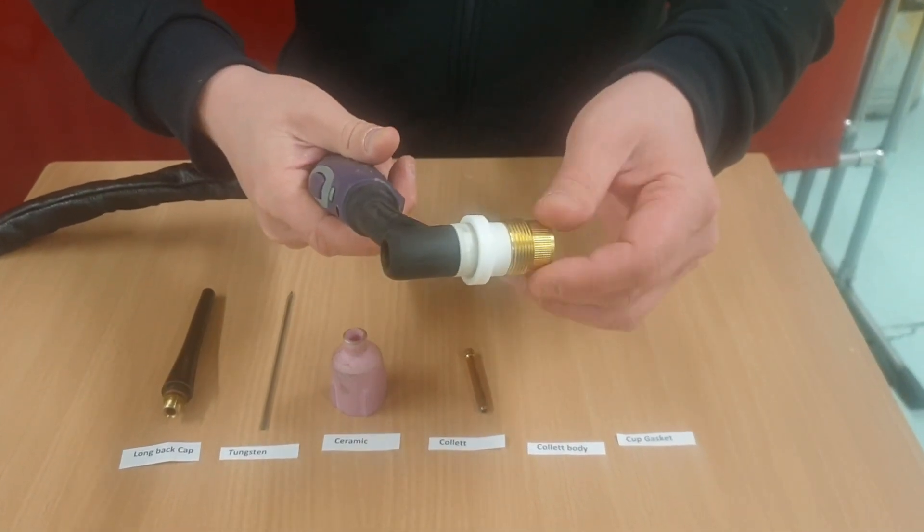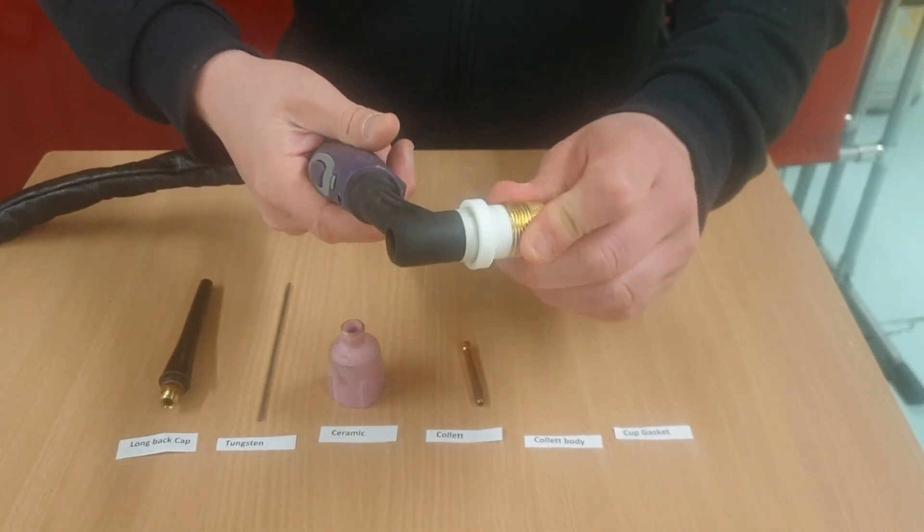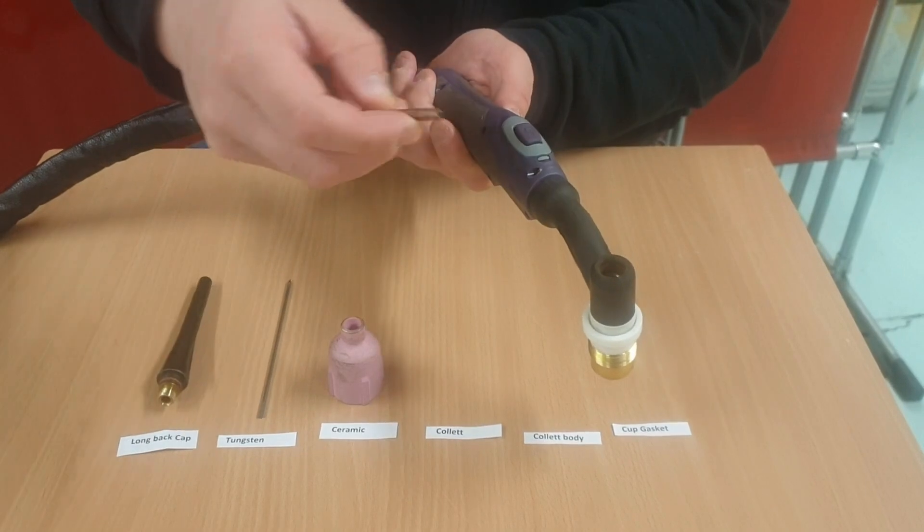The first thing we've done is put the cup gasket on, which is very important as this creates a tight seal so oxygen and other gases cannot interfere with our shielding gas.